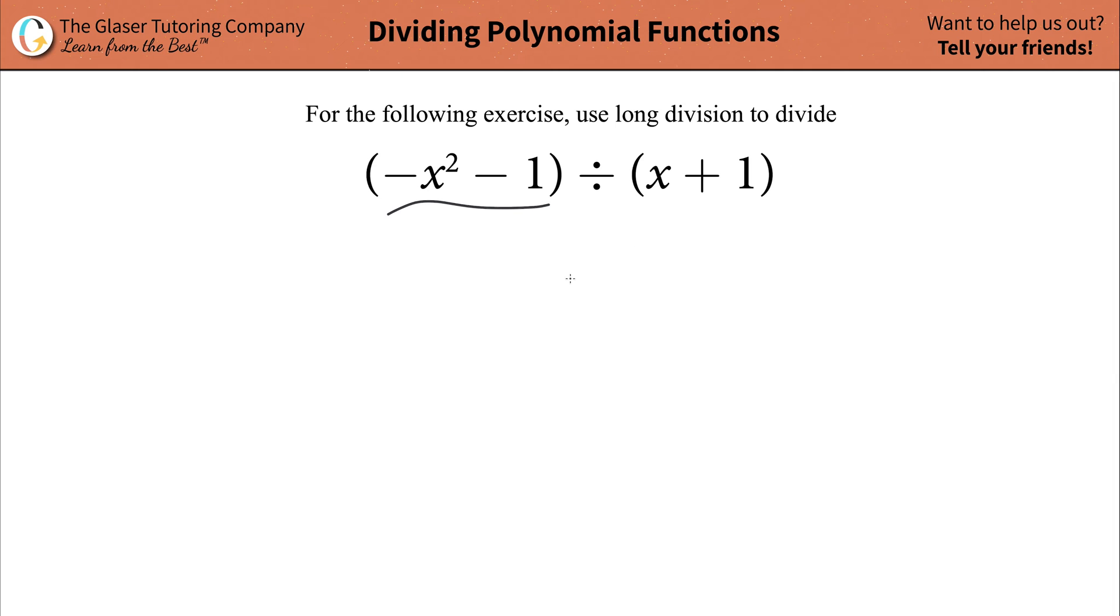So here we have negative x squared minus 1 divided by x plus 1. First thing is I'm going to put it in long division form. So basically whatever's on the right hand side of your division symbol is now outside of your long division symbol, and whatever's on the left hand side gets plugged inside of that long division symbol.